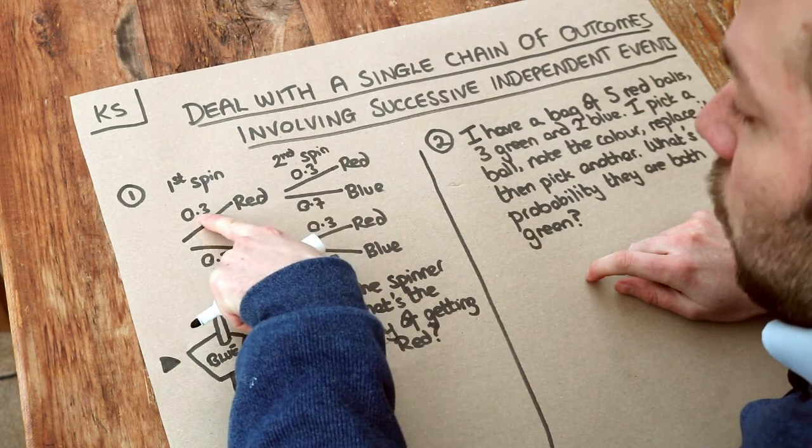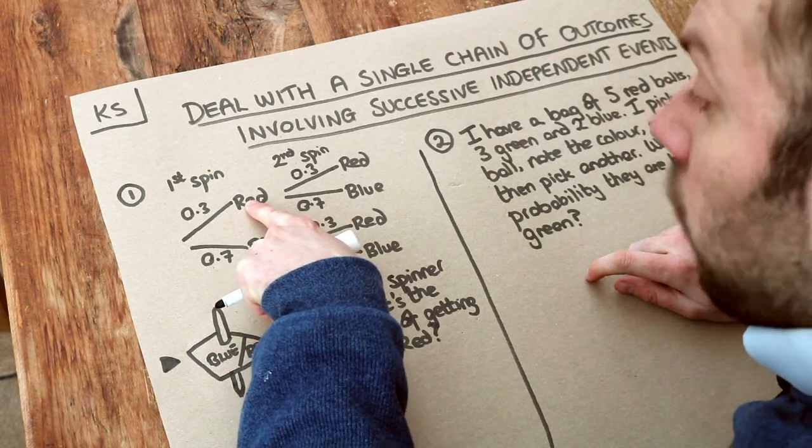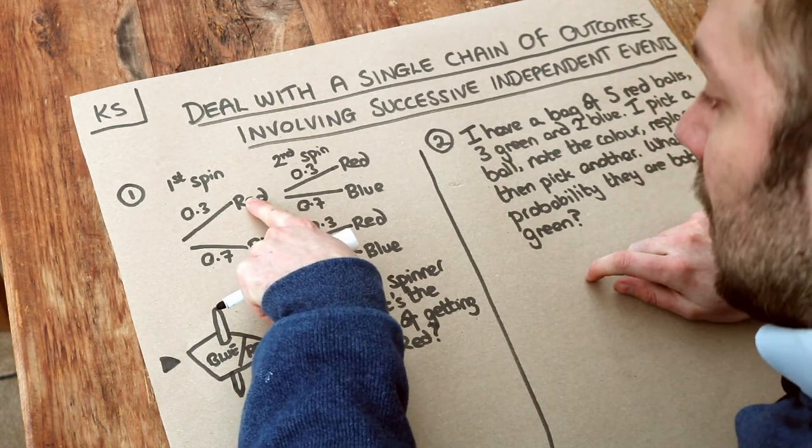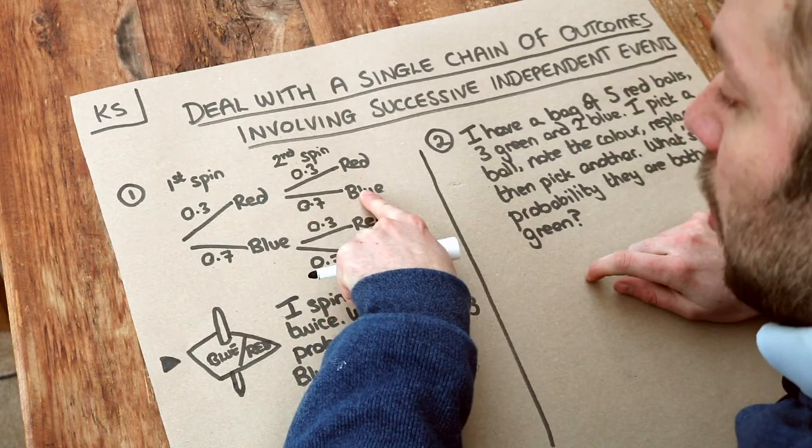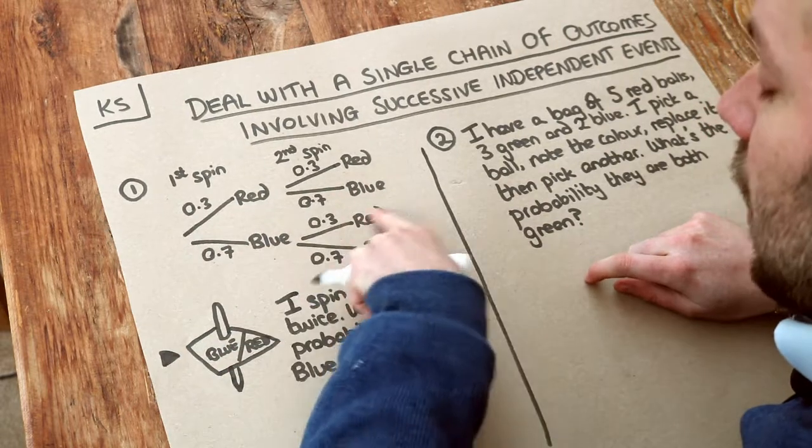So this probability of 0.3 is saying the probability of getting red on the first spin. And then if we got red for the first spin, it's saying there's a probability of 0.7 for blue on the second spin. So this represents a sequence of outcomes: red, blue, blue, red, etc.